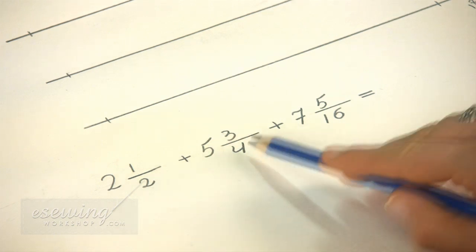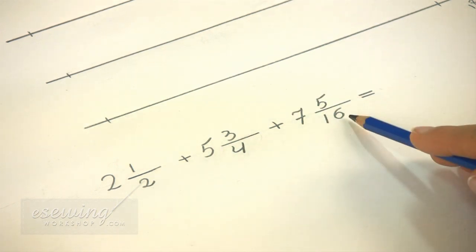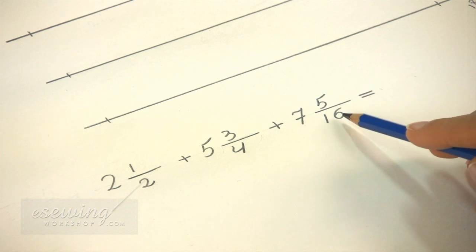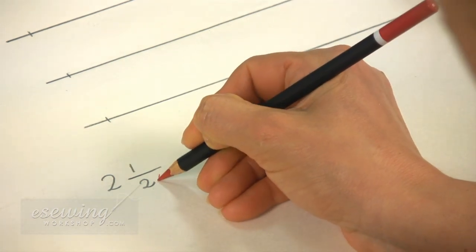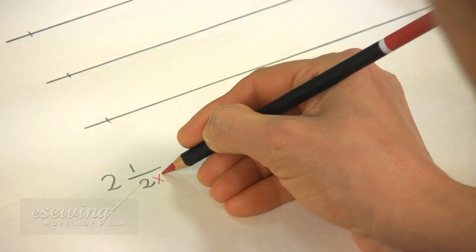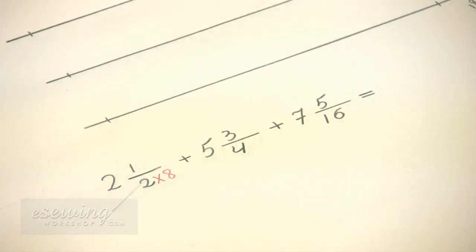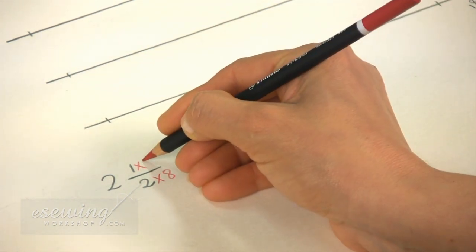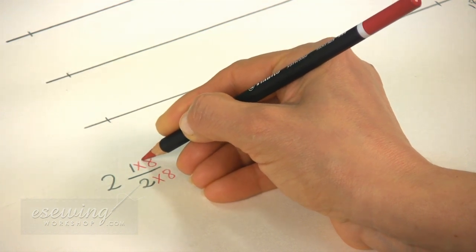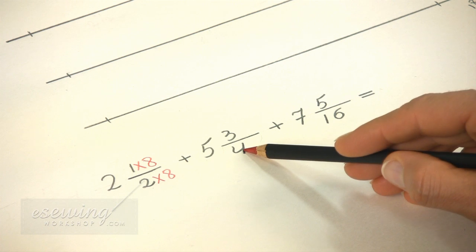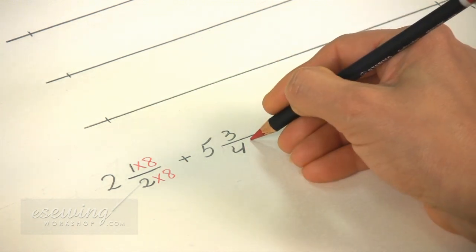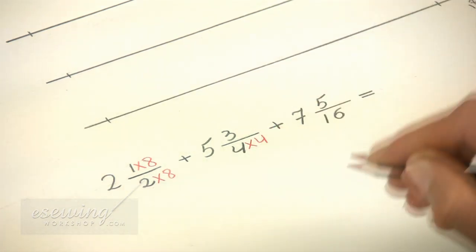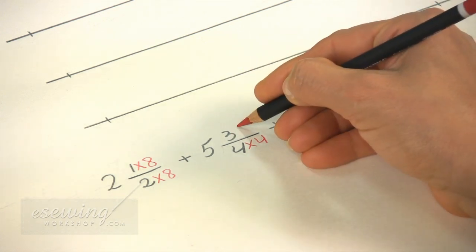First we need to make all the denominators the same. Since 16 is the largest denominator we need to make this denominator and this one the same as 16. To make 2 into 16 we need to multiply it by 8. But we need to multiply the numerator, the number above the fraction line, by 8 as well. Here to make 4 into 16 we multiply it by 4.